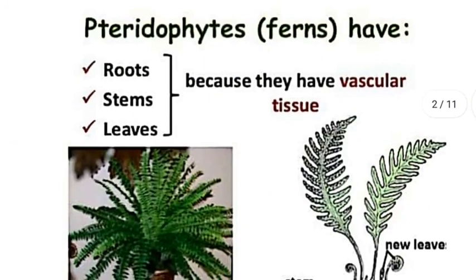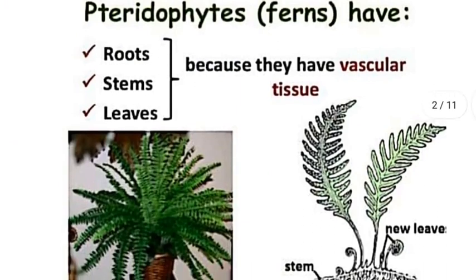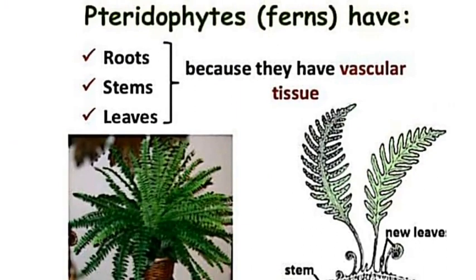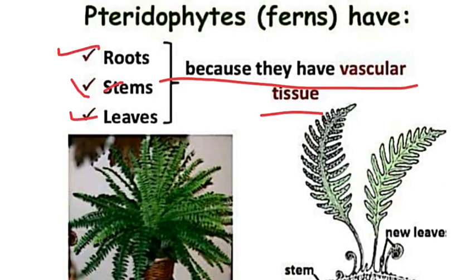Pteridophytes have a proper vascular system. Vascular tissues are present, including xylem and phloem. Roots, stems, and leaves are present, which you can see in this figure.